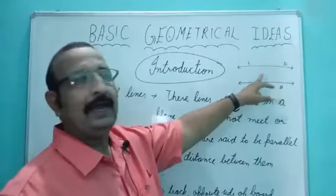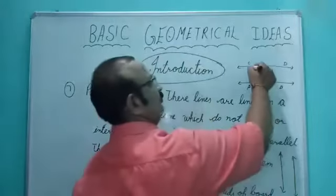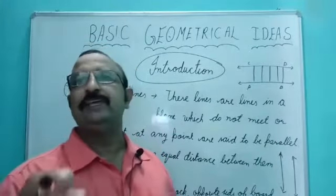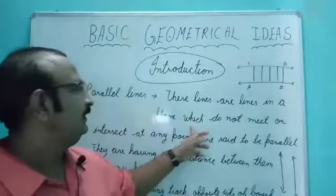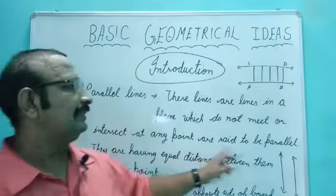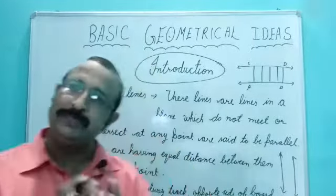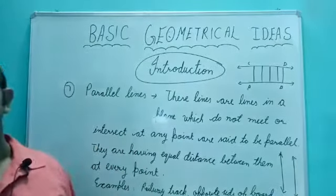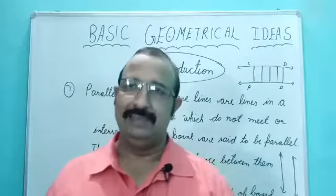Parallel lines - these lines are lines in a plane which do not meet and do not intersect at any point. They are said to be parallel. They are having equal distance between them. The distance between them will always remain equal, always equal at every point. Examples are given here - as I already told, railway track and the opposite sides of a board. These are also parallel and these are also parallel. You can estimate which lines are parallel - those which never meet each other.